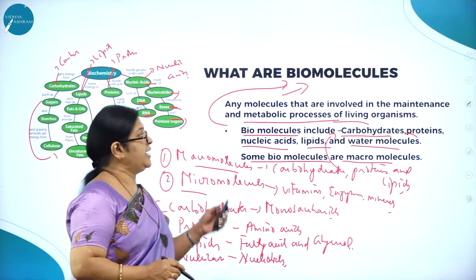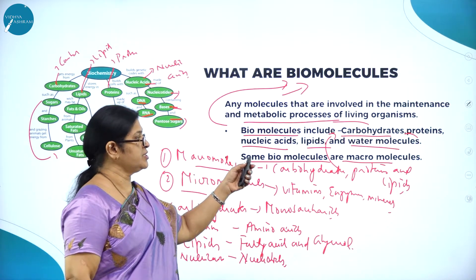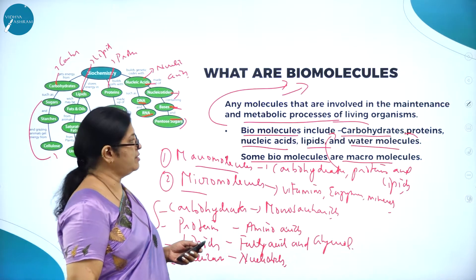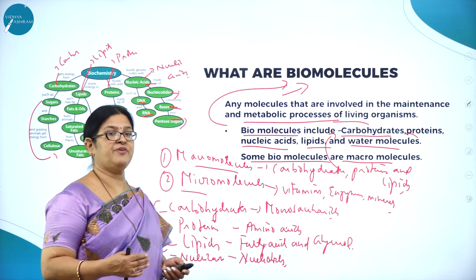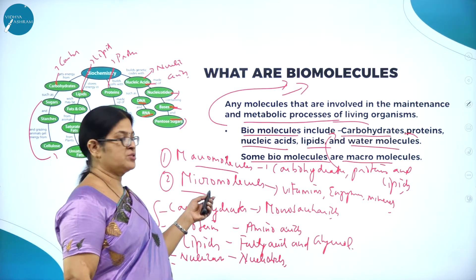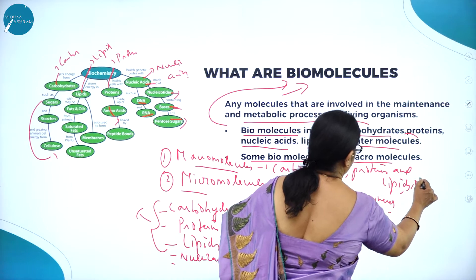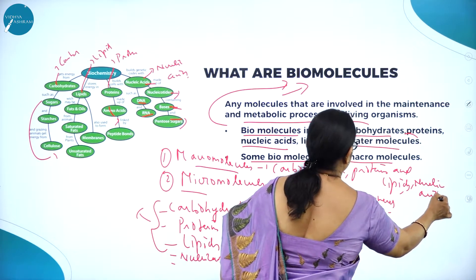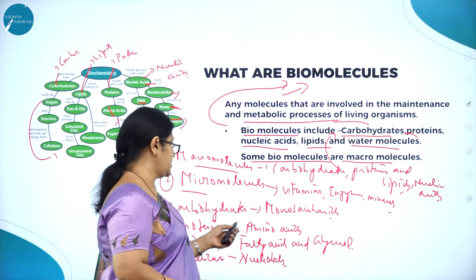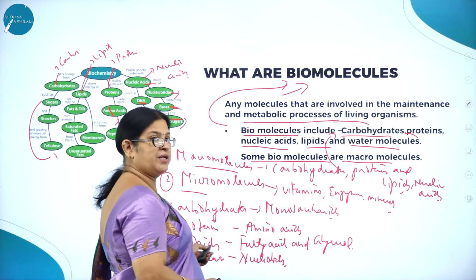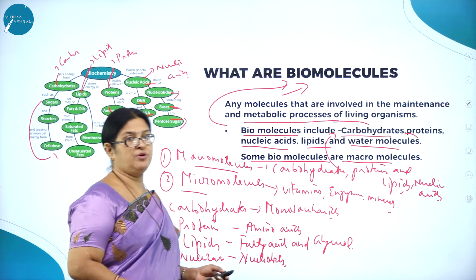Any molecule involved in the maintenance and metabolic processes of living organisms is a biomolecule, including carbohydrates, proteins, nucleic acids, lipids, and water molecules. We classify them into macromolecules and micromolecules. Macromolecules include carbohydrates, proteins, lipids, and nucleic acids. Their respective building blocks are: monosaccharides for carbohydrates, amino acids for proteins, fatty acid and glycerol for lipids, and nucleotides for nucleic acids.